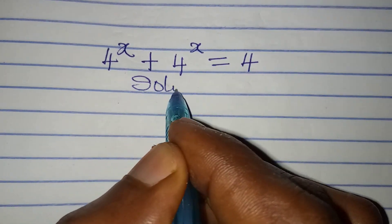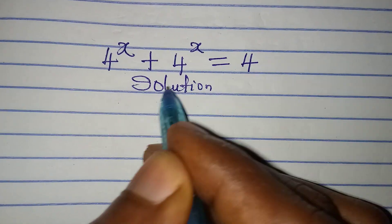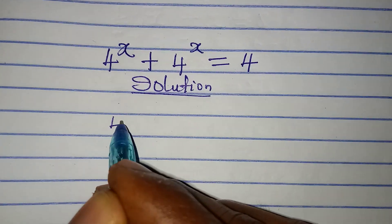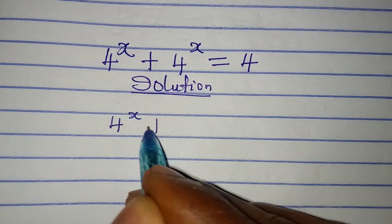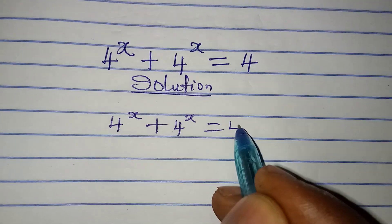Hello everyone, let's solve this problem right away. We have 4 to the power of x plus 4 to the power of x equals 4.